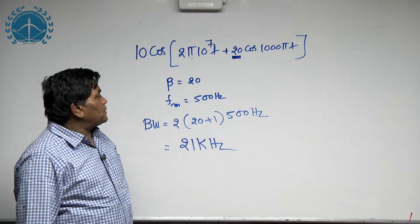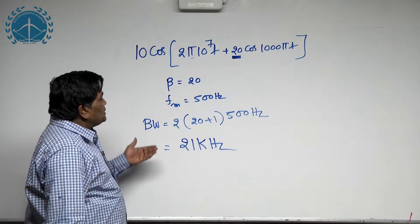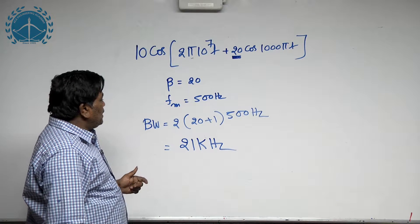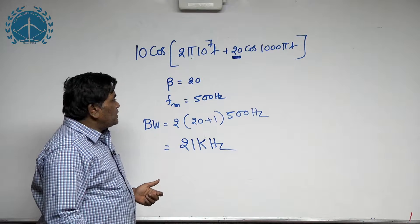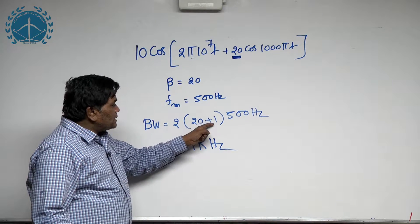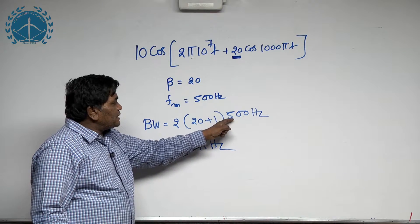It is given in the question as an angle modulated signal, so you can treat it as an FM signal or a PM signal. The bandwidth formula you know very well: bandwidth is equal to 2 into beta plus 1 multiplied with message frequency.